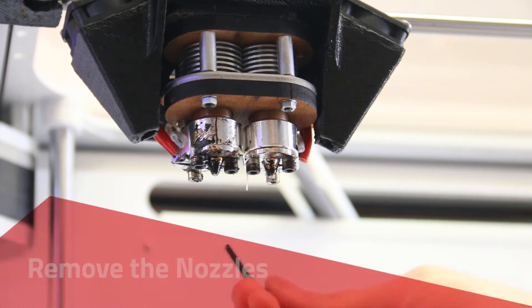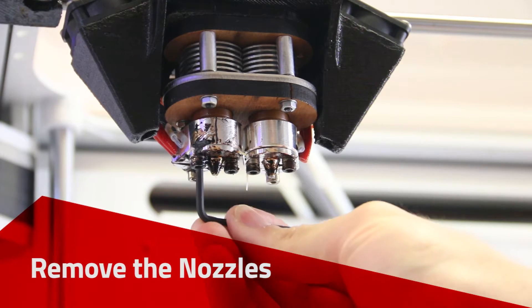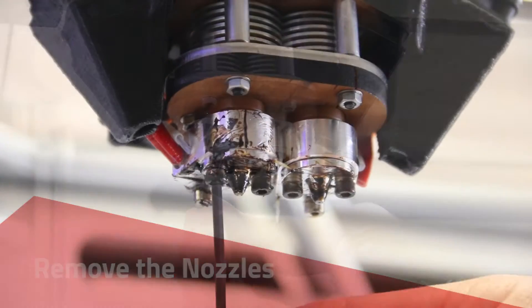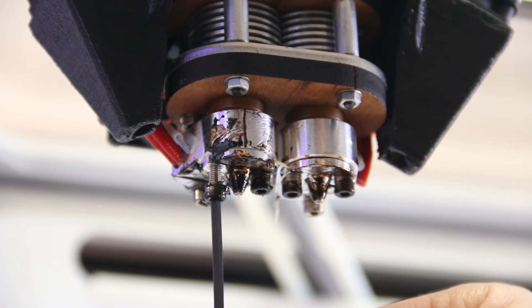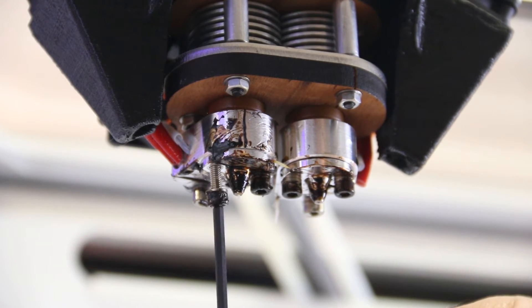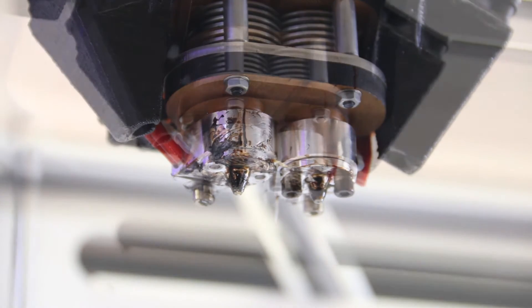Remove the nozzles. Use the torque end first to loosen the screw, then use the long end to remove the screw. If necessary, grip the heating block with a pair of pliers as you loosen the screws.